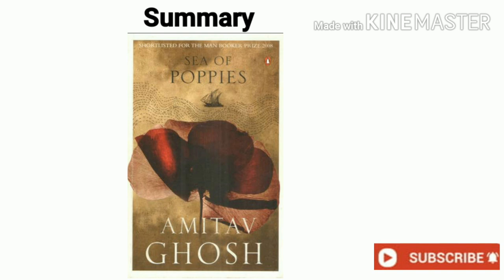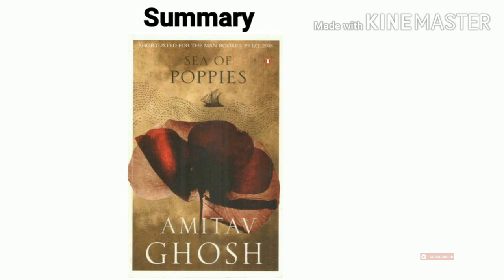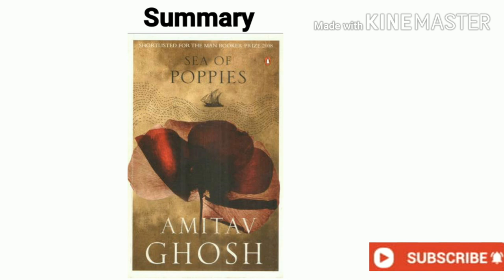The unfortunate Deeti figures out that on her wedding night she was drugged with opium by her mother-in-law so that her brother-in-law could consummate the marriage in place of her infertile husband. This brother-in-law is the real father of Deeti's daughter Kabutri. When her husband dies, Deeti sends Kabutri to stay with relatives. Deeti looks almost certain to meet her doom when she chooses to go through the sati ritual — immolation on her husband's funeral pyre.